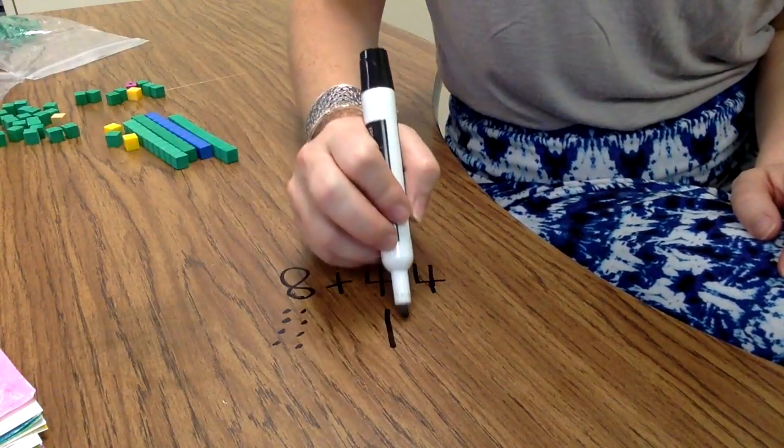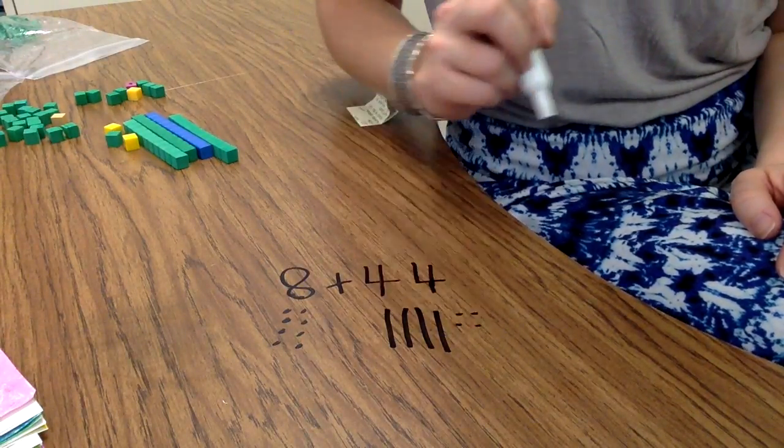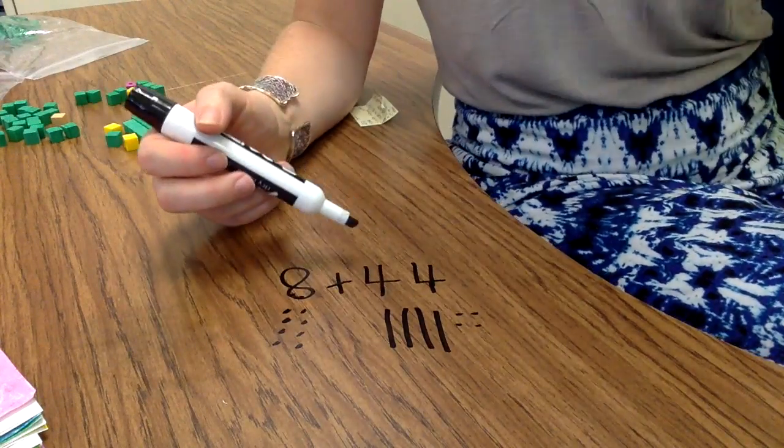So this is 10, 20, 30, 40, 41, 42, 43, 44. There's my picture representation of 8 plus 44.